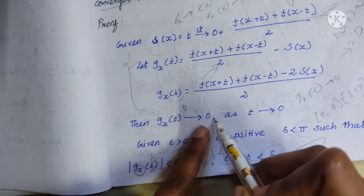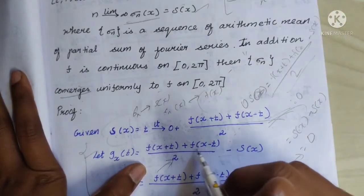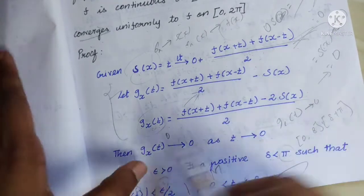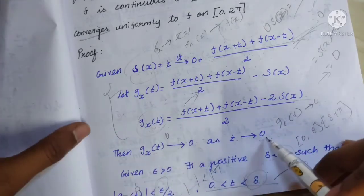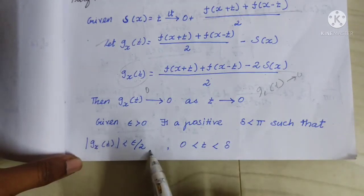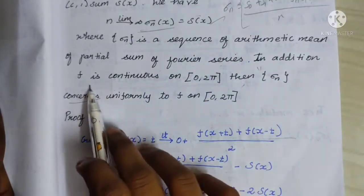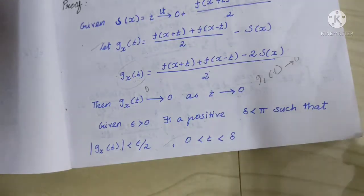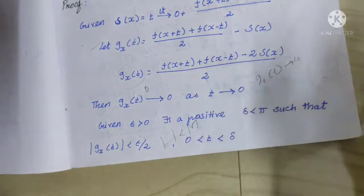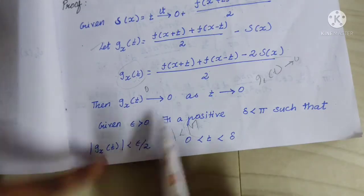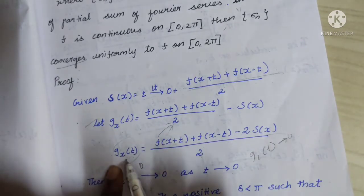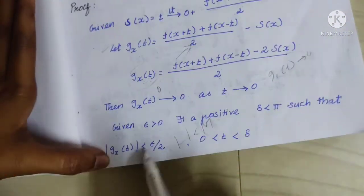So we consider gₓ(t) = [f(x+t) + f(x−t)] / 2 − s(x). That's why this value is 0 when t = 0. Given ε > 0, there exists a positive δ < π such that |gₓ(t)| < ε/2. Since f is continuous on [0, 2π], it is bounded, so |f| ≤ M for some positive M. That's why gₓ(t) < ε/2.